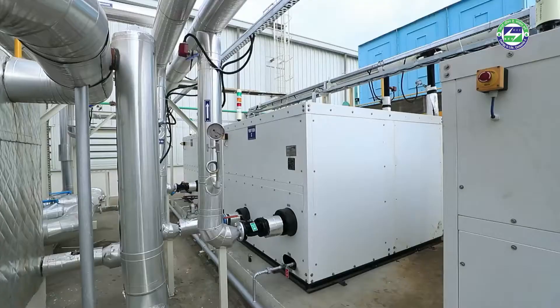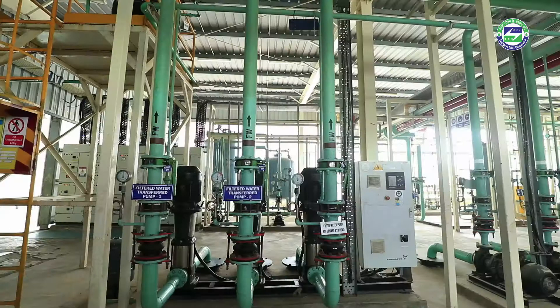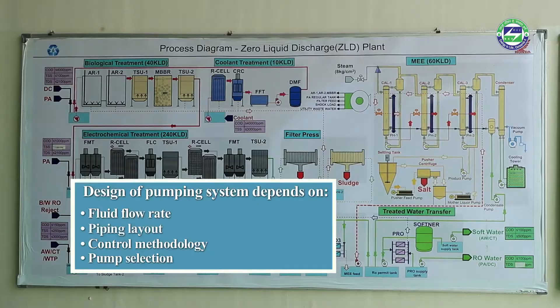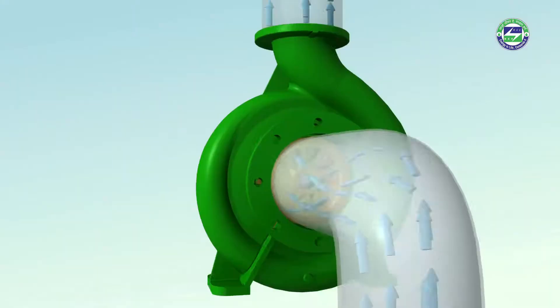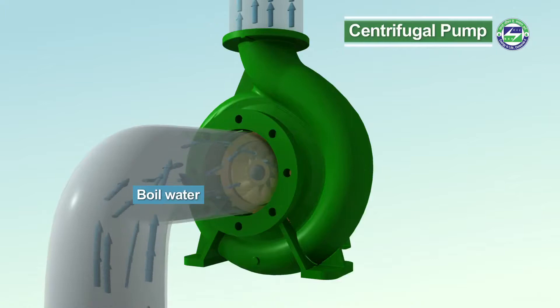The design of an efficient pumping system depends on the relationship between fluid flow rate, piping layout, control methodology, and pump selection. If pressure on the suction side goes below the vapour pressure of water, it will make water boil, forming vapour bubbles and spoiling impeller material over time. This phenomenon is known as cavitation.